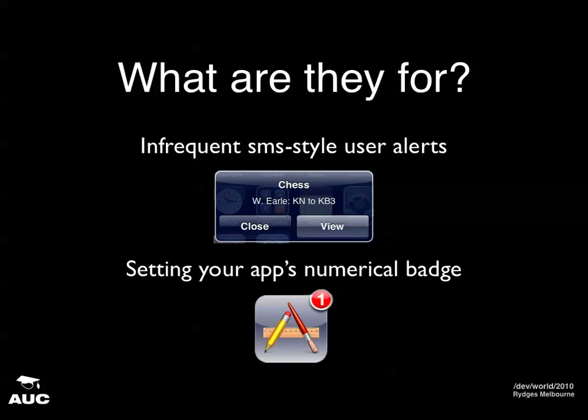Push notifications — what are they for? They're for small SMS-style notifications. I'm sure everyone's played Words with Friends or Chess with Friends, where you get a push notification saying it's your turn — a very small amount of information. You can use them for other things as well, but they're best for small, non-reliable pieces of information. You can also set the app's numerical badge — things like unread message counts or number of Words with Friends turns.